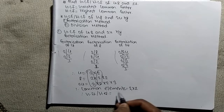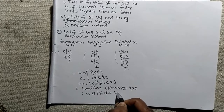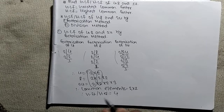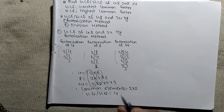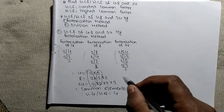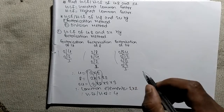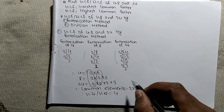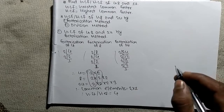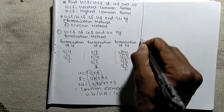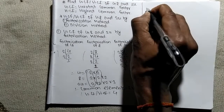GCF or HCF is the product of the common elements. Our common elements are 2 and 2. Therefore, the product of 2 and 2 is equal to 4, which is our GCF or HCF. In this way, we can find GCF or HCF by factorization method.